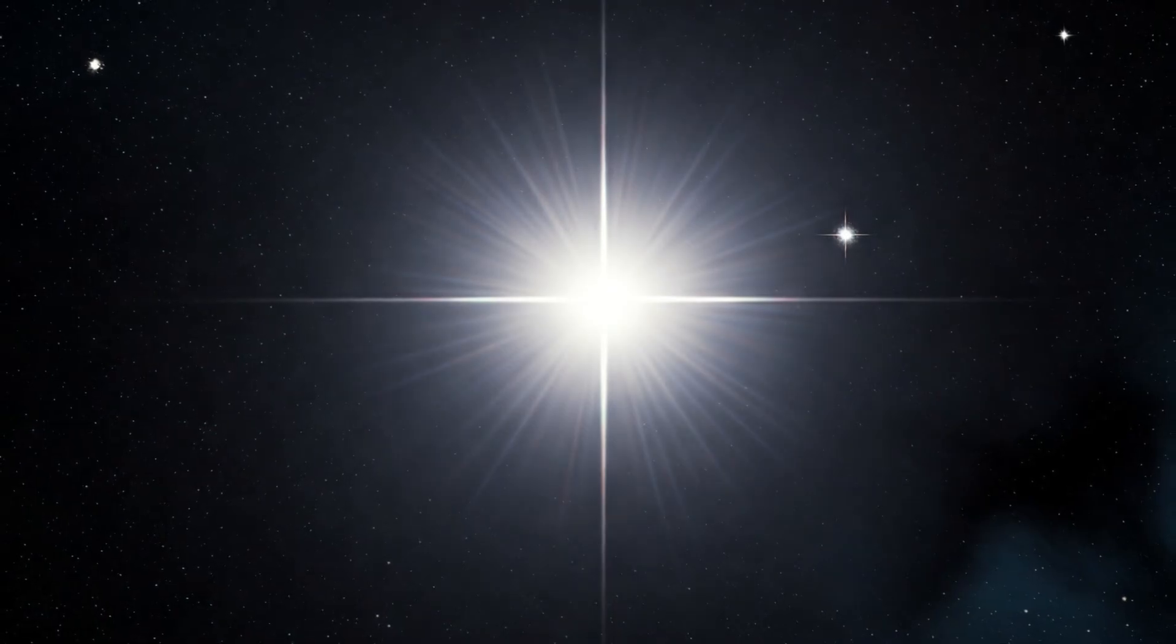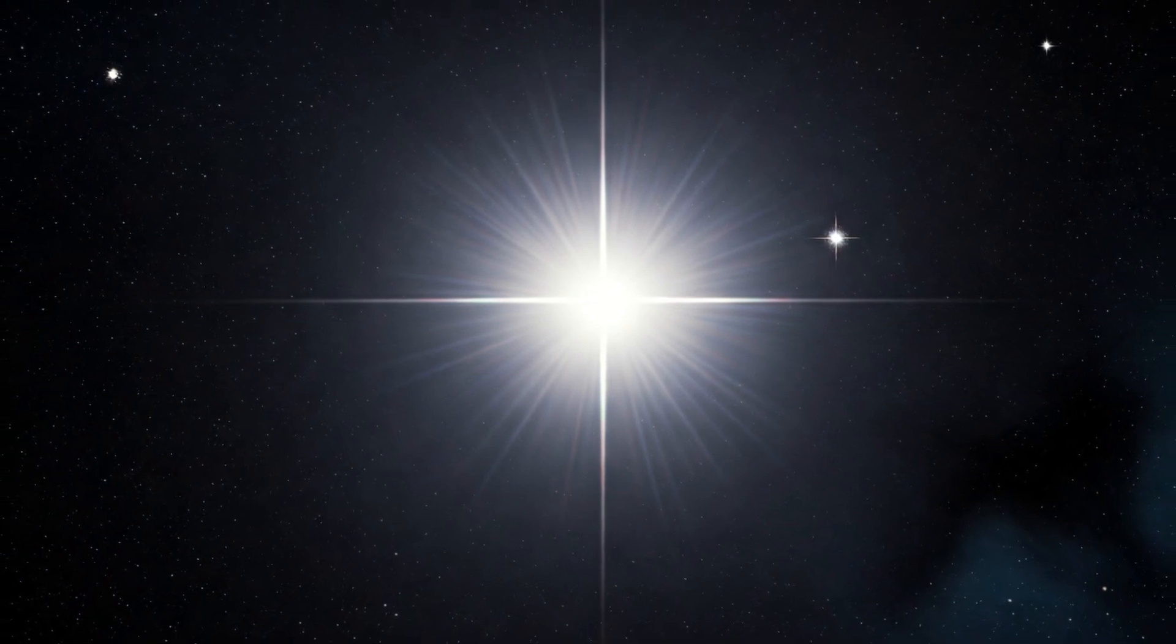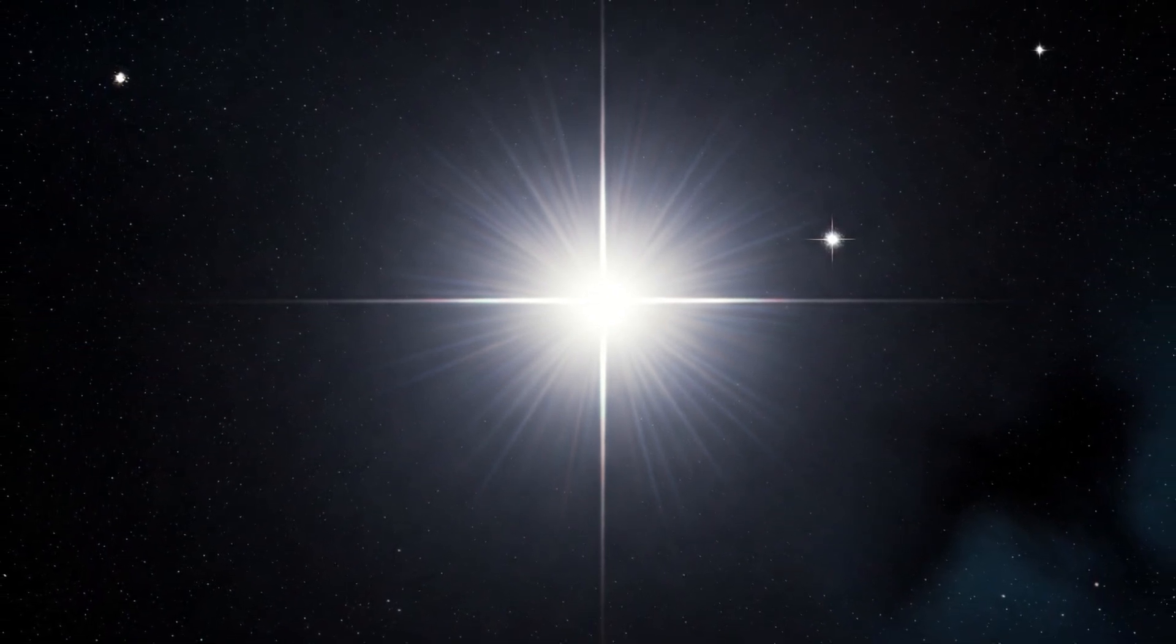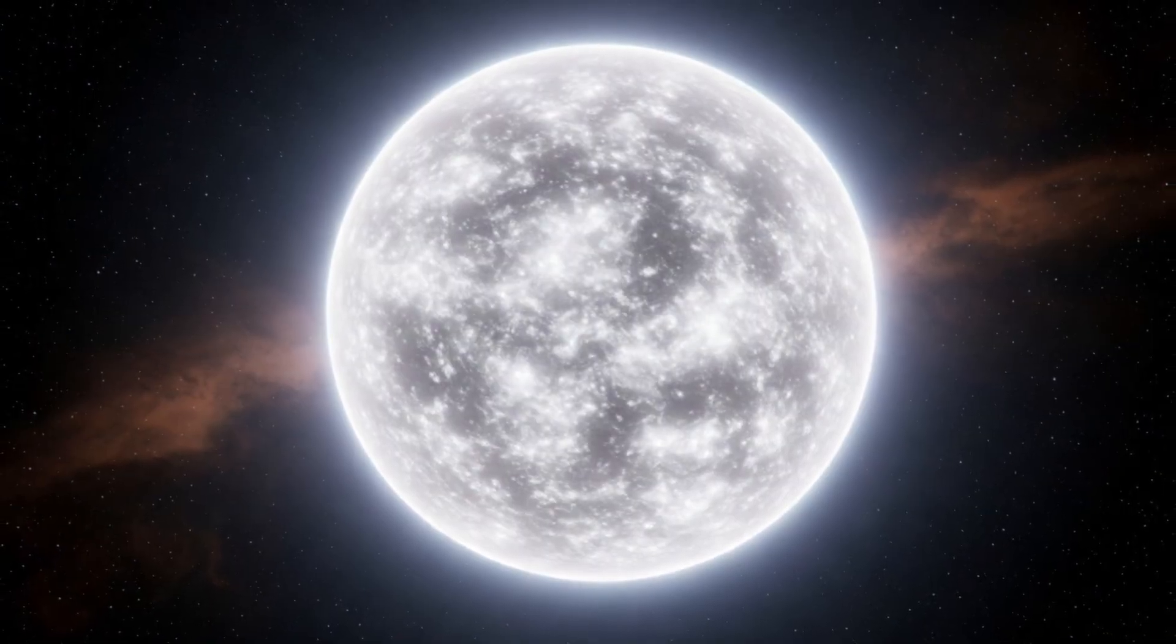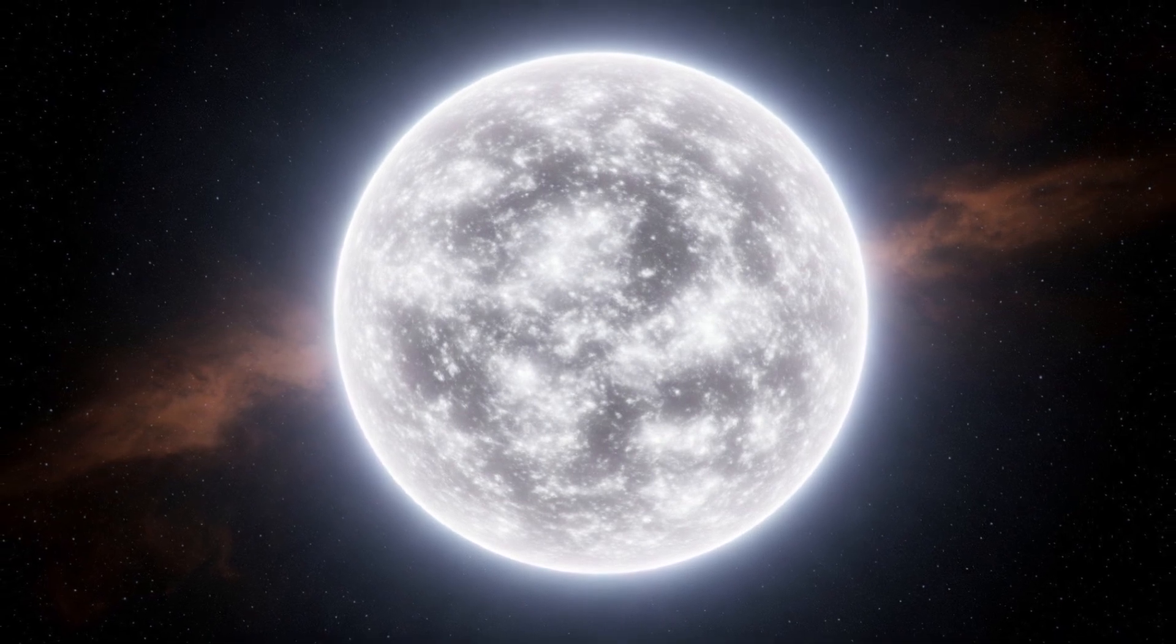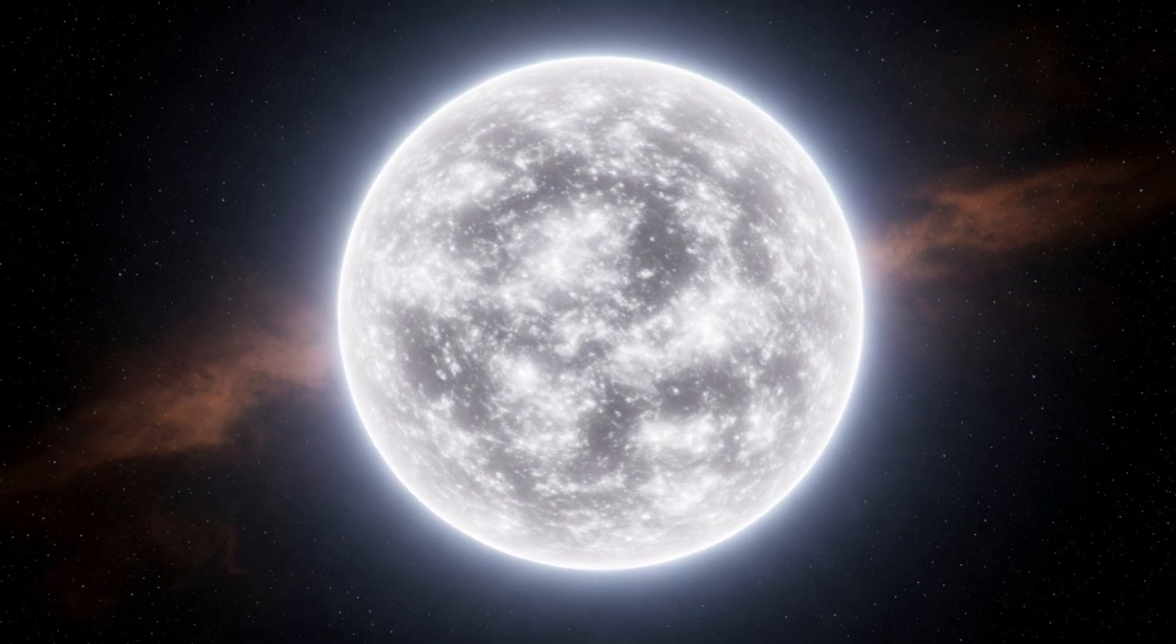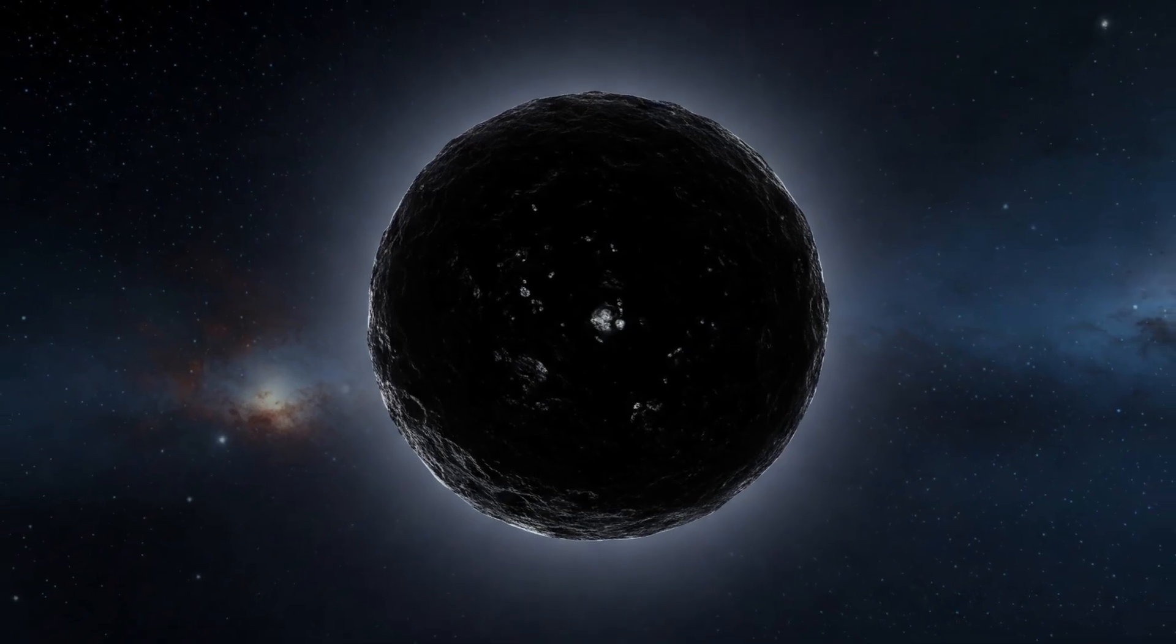But what will happen to Methuselah in the future? Its final fate is to become a white dwarf, an extremely dense and hot core left after its outer layers have been expelled. This process can take billions of years, but it doesn't end there. Over time, the white dwarf will continue to cool, until after trillions of years, it will turn into a black dwarf.